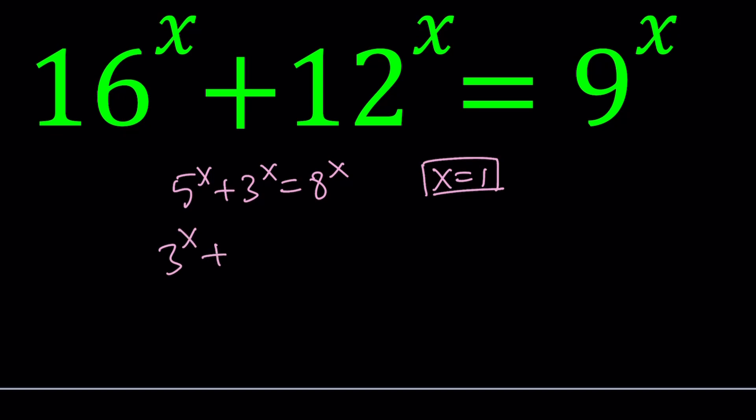x equals 2 could also be an option. For example, if you had 3 to the x plus 4 to the x equals 5 to the x. I think I made a video a long time ago about this. And this would be x equals 2 because, as you know from Pythagorean theorem, this is going to work.